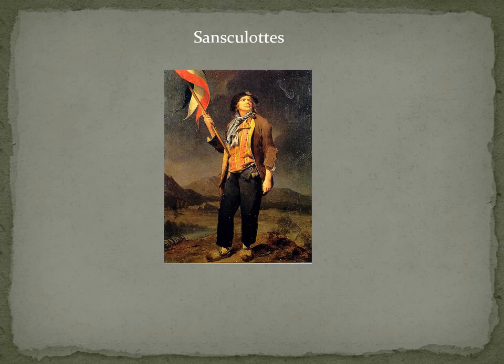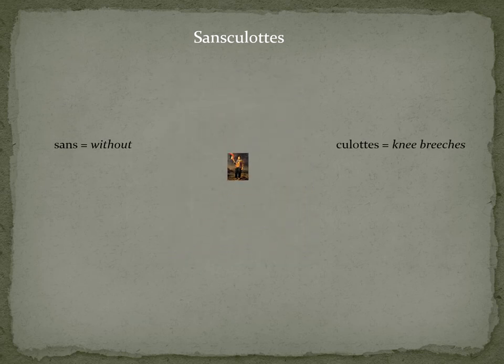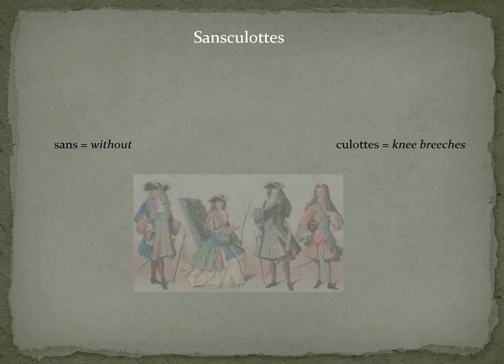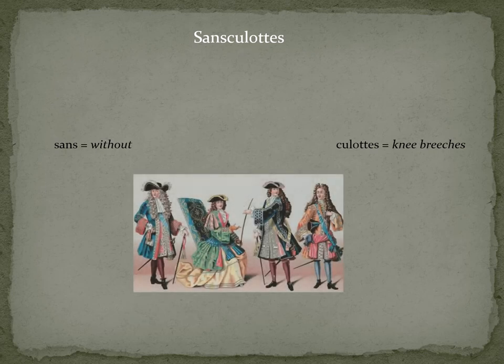A new revolutionary group developed: the sans-culottes. Sans means 'without', and culottes are knee-breeches, which are worn by the nobility.